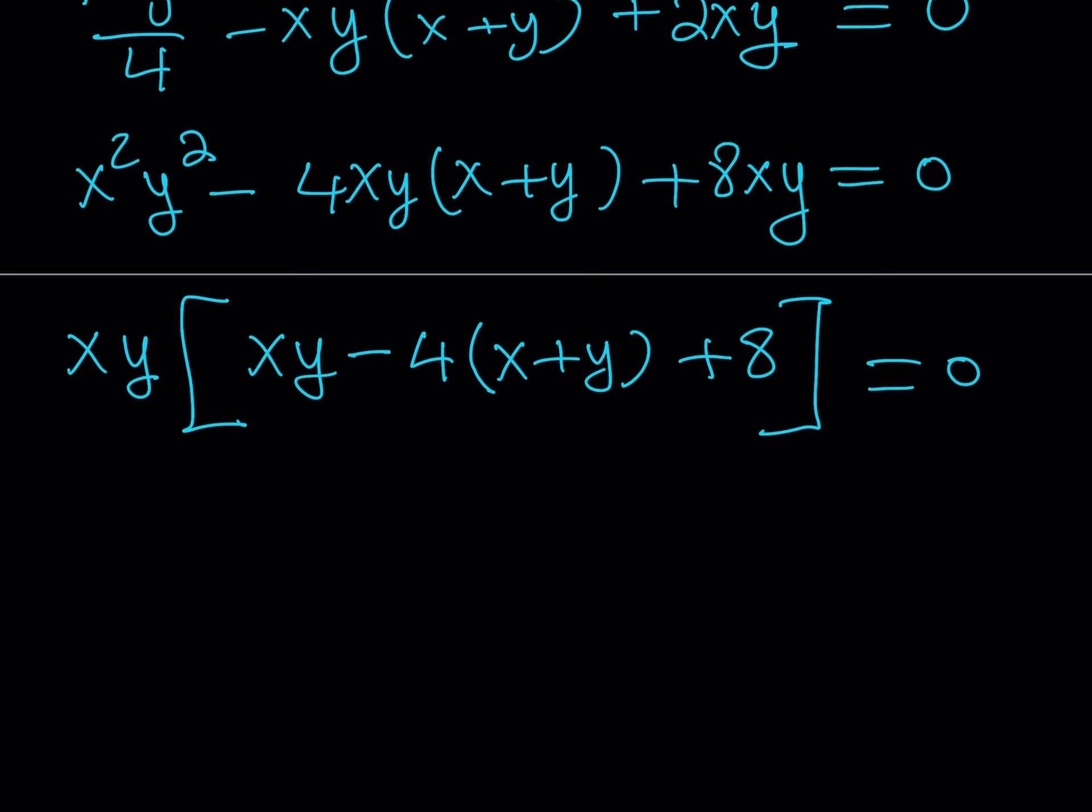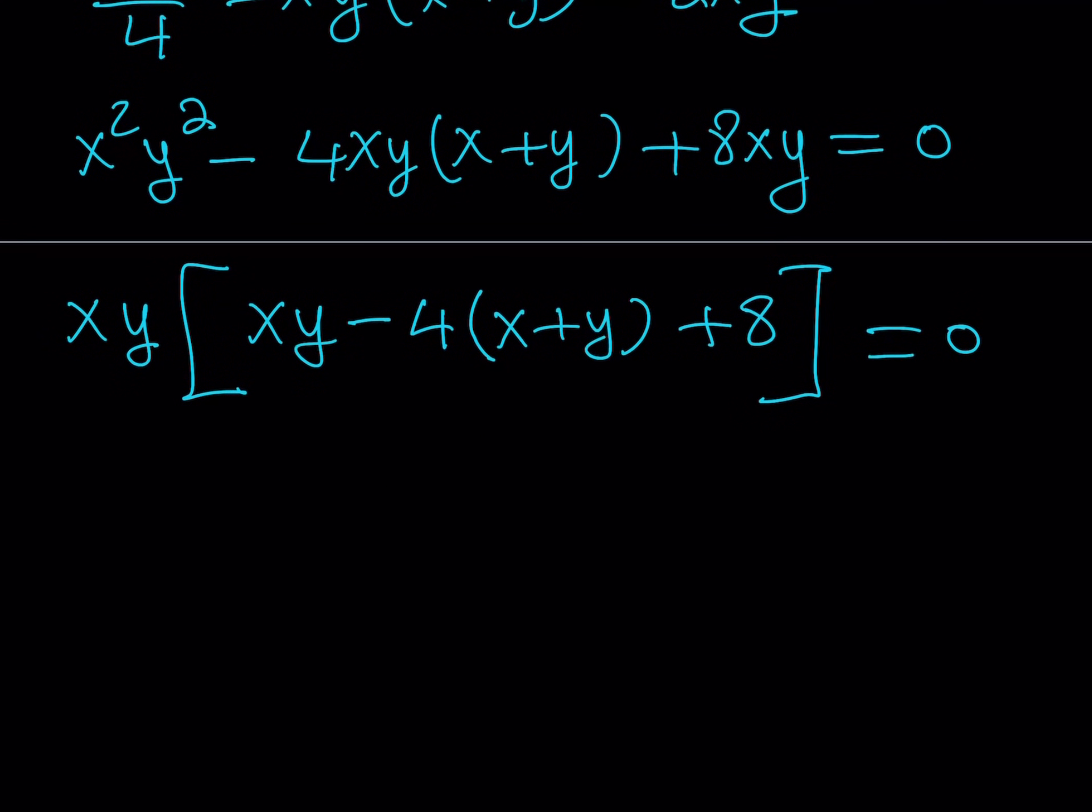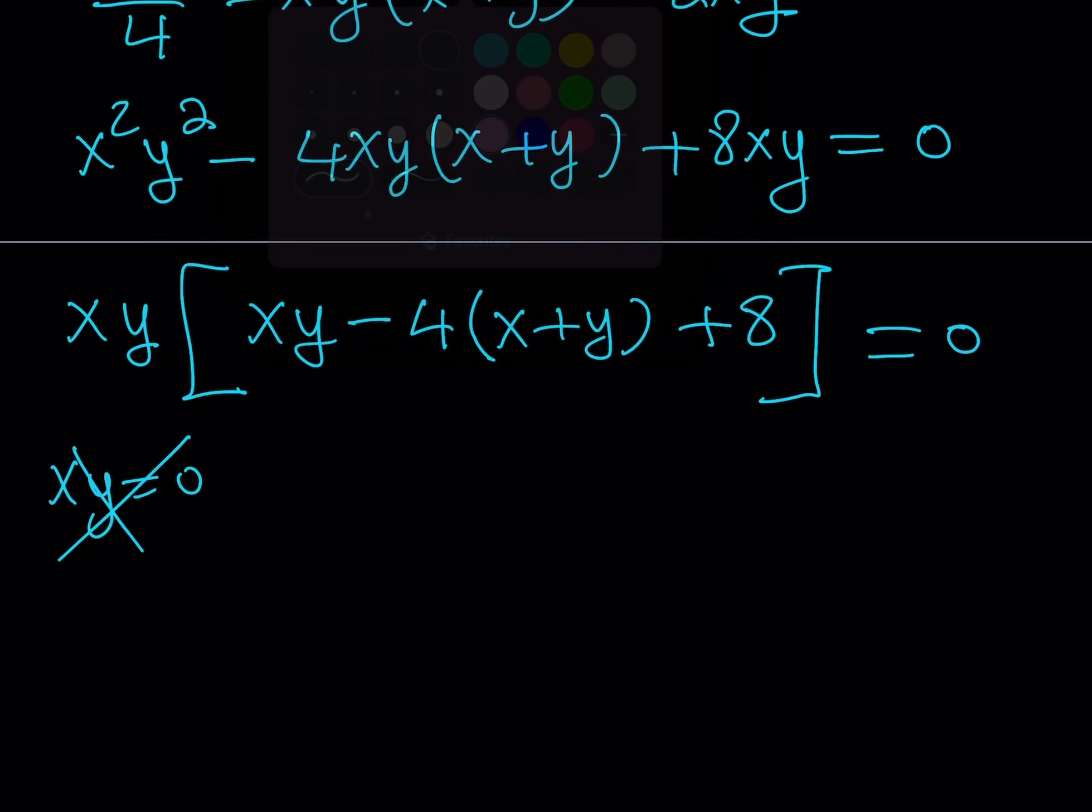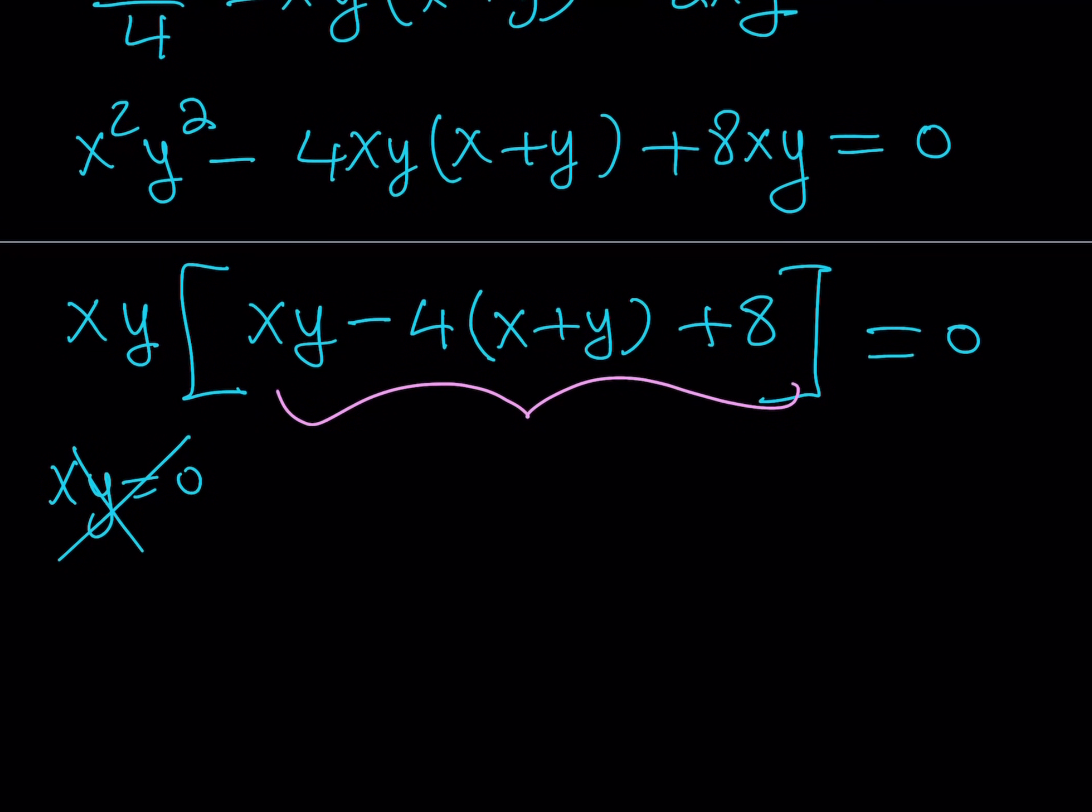Now, obviously, we're not going to be looking for degenerate - is that generate or degenerate? I think it's degenerate. Anyways, we're not looking for solutions where xy is equal to zero, because that would mean x is zero or y is zero. But we don't care about those, right? Those are not good triangles. We're going to be looking for good triangles, and they're going to come from the second factor, which is this one. So let's go ahead and set that equal to zero and work it out and see what this gives us.